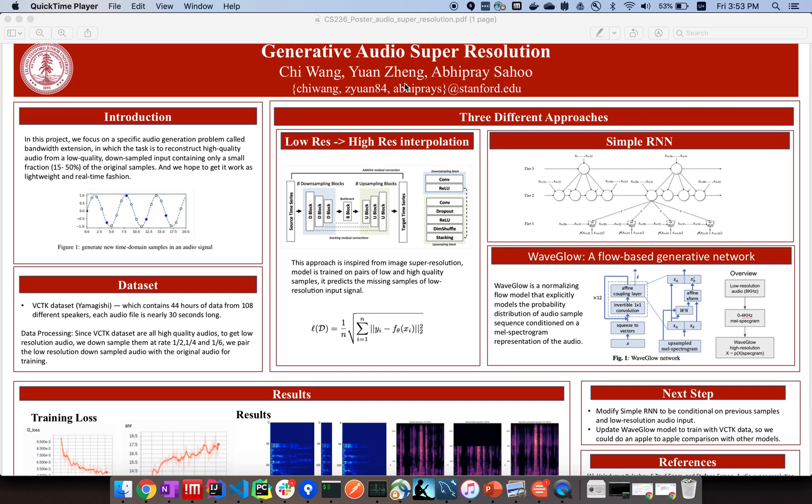By doing that, we explore three different generative-related models. The first one is the low-res to high-res interpolation model which is inspired by an image super-resolution approach. The next one is the Sample RNN which is an unconditional end-to-end neural audio generation model. The last one we try is the WaveGlow model, a flow-based generative model. We're going to talk about it later.